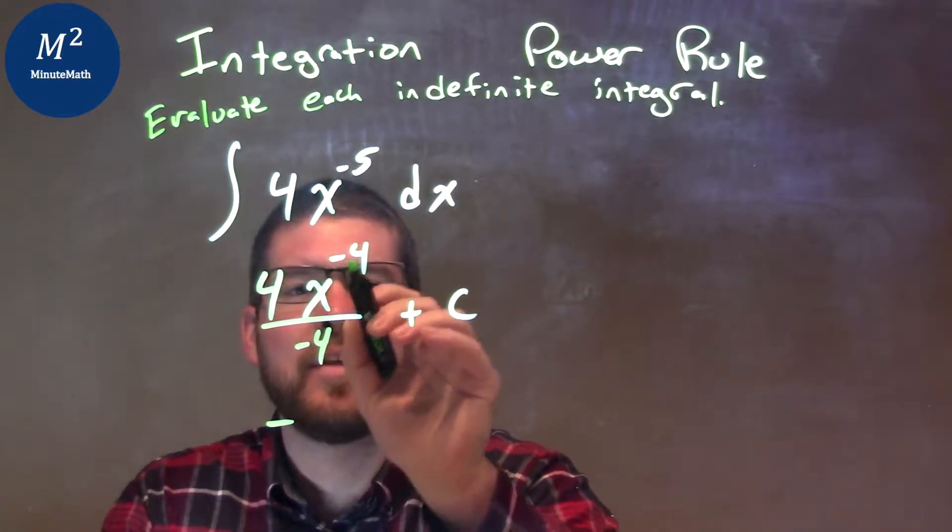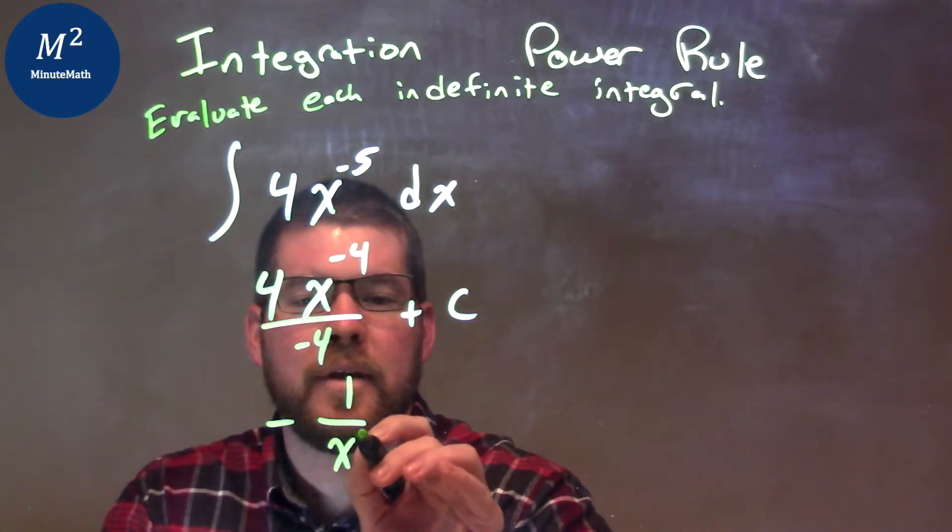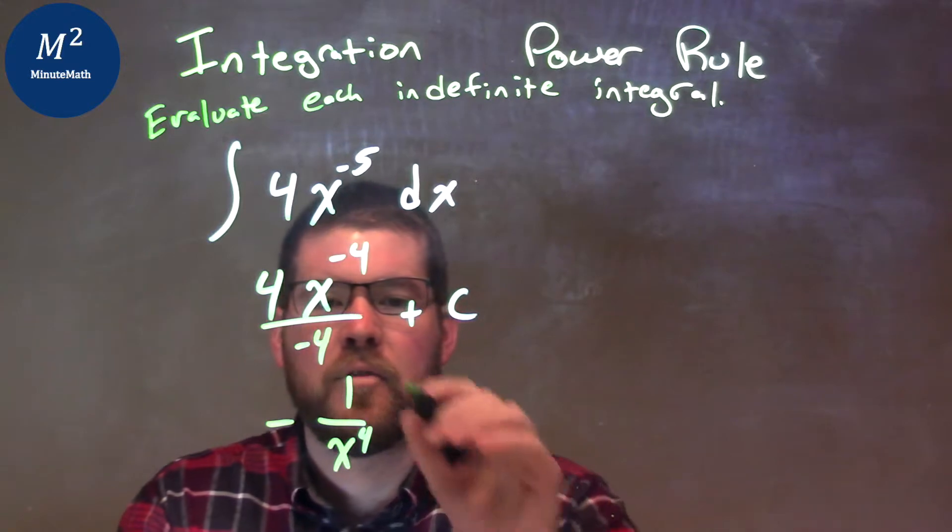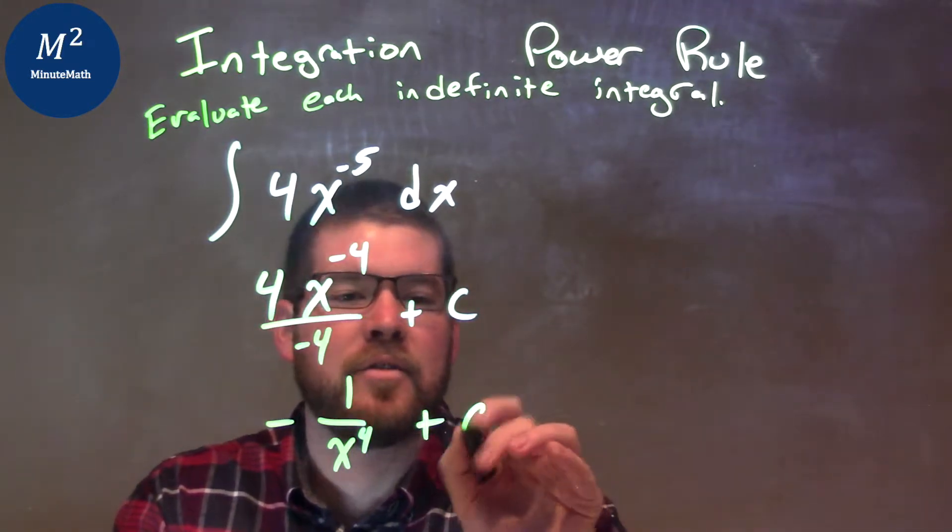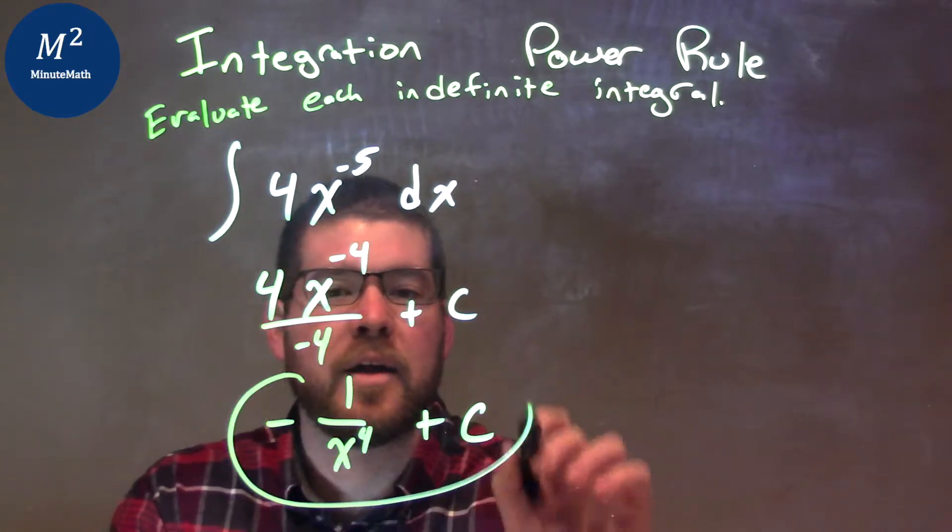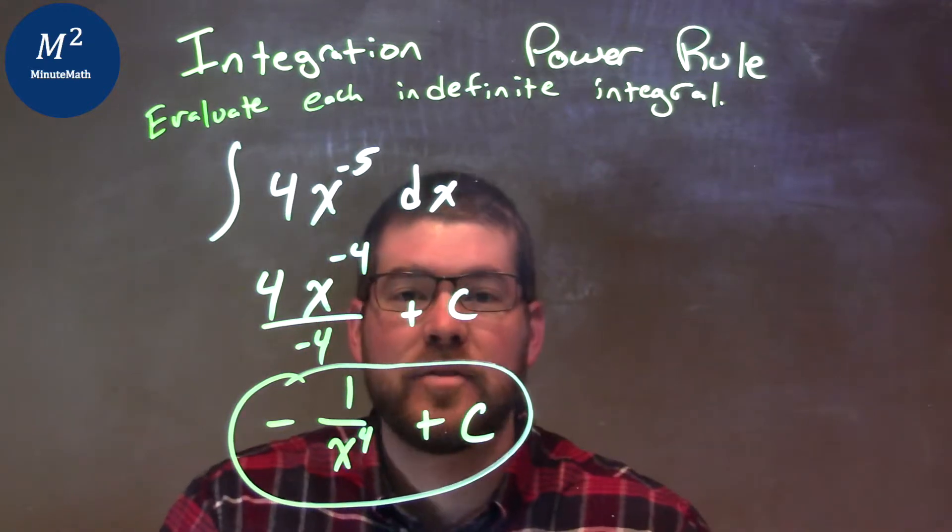And we see that x to the negative 4th power, I can rewrite that to be x to the positive 4th power in the denominator. So I have 1 over x to the 4th power, and then negative out front, and then I have my plus c. And there we have it, our final answer: negative 1 over x to the 4th power plus c.